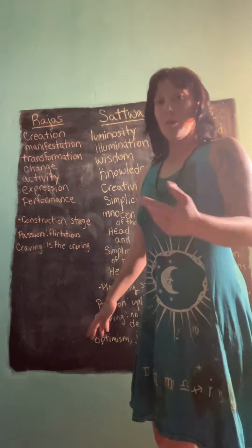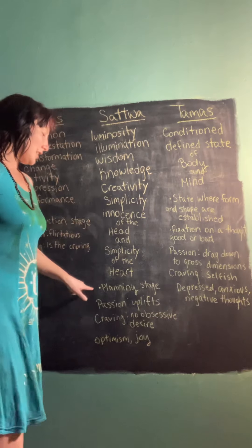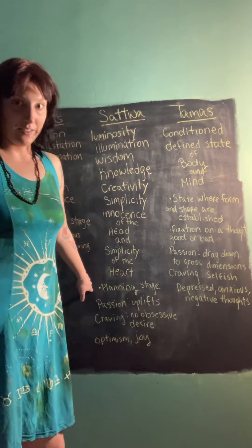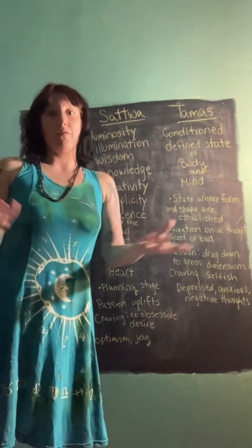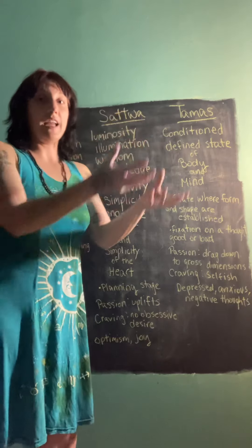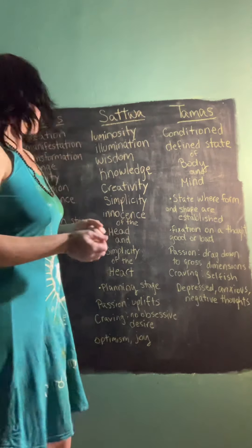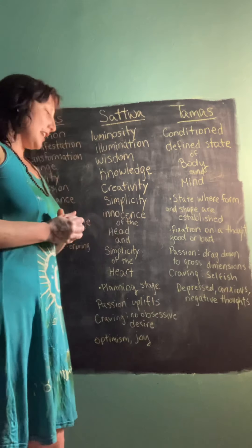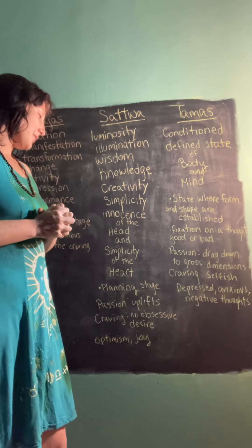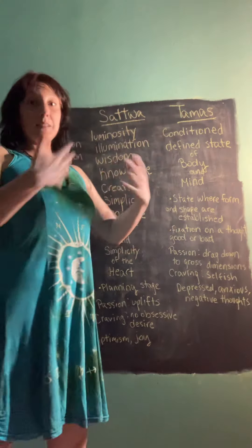Sattva is responsible for luminosity, illumination, wisdom, knowledge, creativity, simplicity, innocence of the head, and simplicity of the heart. When you're coming up with a manifestation, this is the planning stage — this is where you're actually getting ideas as to how to change your environment, or what you will be like when you attain that manifestation. When it comes to passion, people who are generally sattvic experience passion as an uplifting, inspiring sort of thing.